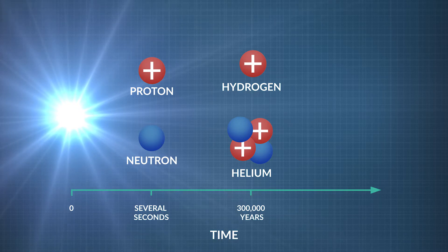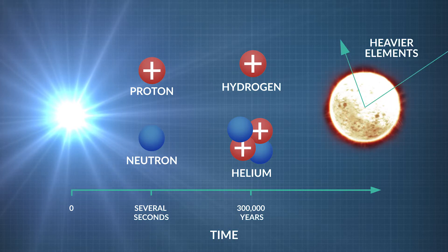As nuclear fusion continues in the cores of stars, heavier elements form. Elements with atomic numbers heavier than 26, which is iron, are formed during supernovas.